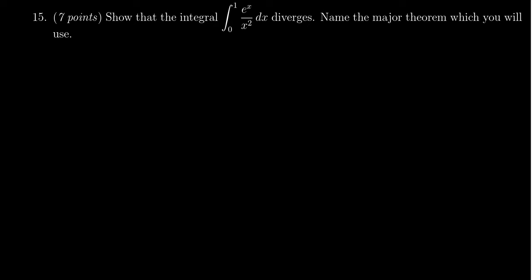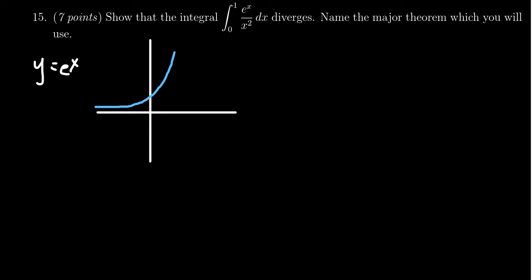We're going to use the comparison test. If you look at the graph y equals e to the x, the standard graph is an increasing exponential function. We want to go from 0 to 1, and this function is increasing on these bounds. So we can see that on this interval, e to the x is greater than or equal to 1.